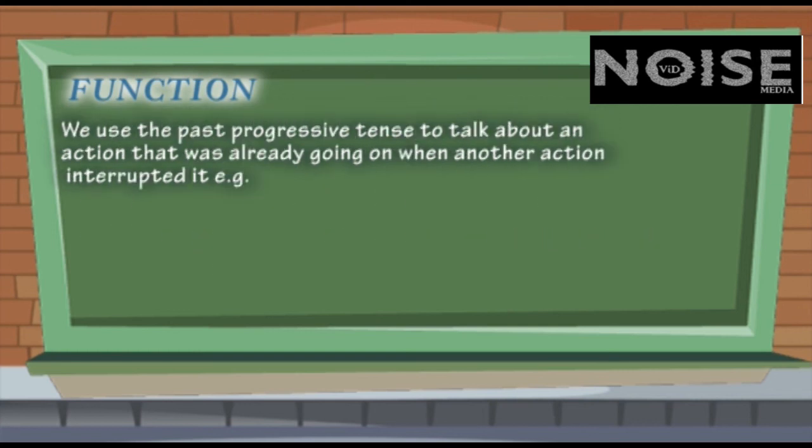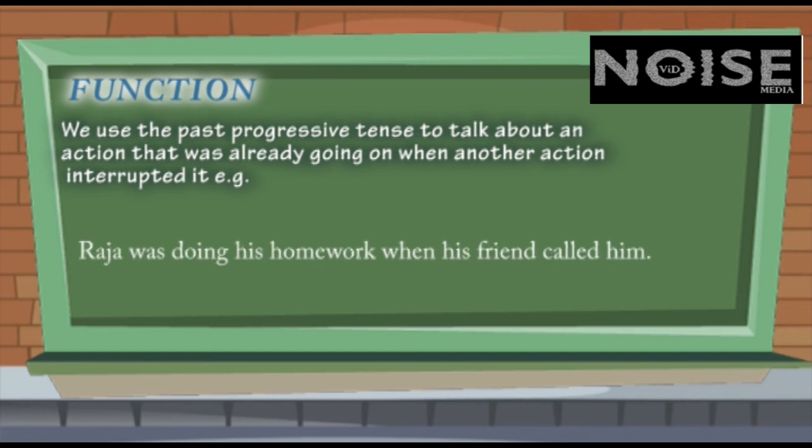We also use a past continuous tense to talk about an action that was already going on when another action interrupted it. Sometimes you're doing something and suddenly something happens and you stop doing that thing. This is the idea. I was sleeping when someone knocked at the door. And can you guess what happened? I got up. They were having a cup of tea when the telephone rang. Raja was doing his homework when his friend called him.